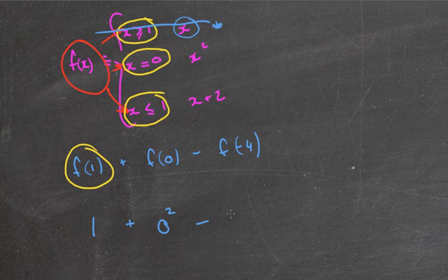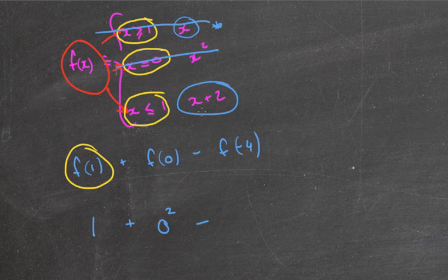I've now got minus, another function. This time it's negative 4. Now, if I look at the first two, obviously negative 4 is not greater than or equal to 1. It doesn't equal 0, but it is less than or equal to 1. So we're going to use the function of x plus 2. So I'm going to put in here negative 4 plus 2.